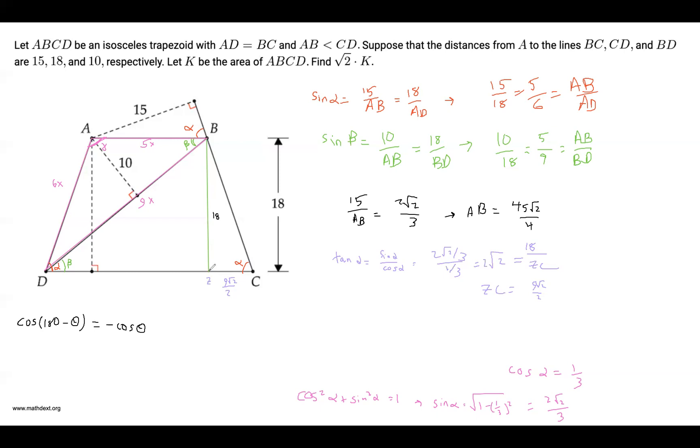And remember, we specified earlier that this length is going to be equal to this length because this trapezoid is an isosceles trapezoid. So we can use that property. And we get that this length is 9 root 2 over 2. And since this is a rectangle over here, we've got this length is equal to AB, which is 45 root 2 over 4.